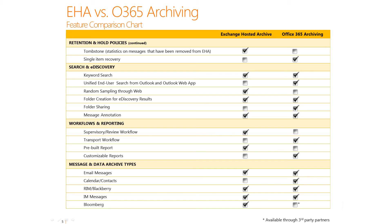Exchange Hosted Archive and Office 365 both have retention and hold policies. EHA gives you simple statistics on how many messages have been removed from the EHA service. Office 365 allows an organization to actually restore those messages if they request, based on their expiration period set by the business.